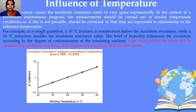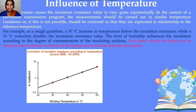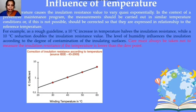Temperature causes insulation resistance to vary quasi-exponentially. Measurements should be carried out at similar temperature conditions; if not, values must be corrected to a reference temperature. As a rough guideline, a 10°C rise in temperature halves the insulation resistance, while a 10°C reduction doubles it. Humidity also affects insulation resistance depending on the degree of contamination on the insulating surface. Care must always be taken not to measure insulation resistance if the temperature is below the dew point. The IEEE Std 43-2000 provides a correction factor K based on winding temperature.